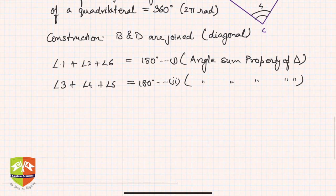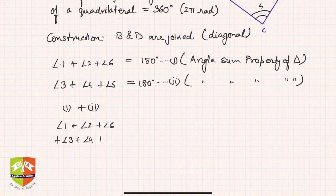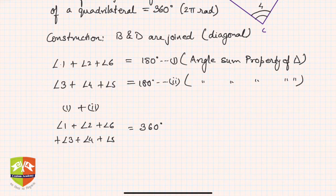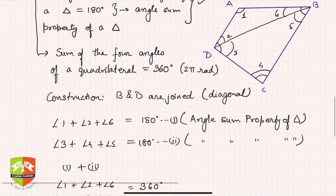Now let's add equation one and equation two. On the left-hand side we get angle 1 plus angle 2 plus angle 6 plus angle 3 plus angle 4 plus angle 5, and the right-hand side gives 180 plus 180 equals 360 degrees. Clubbing them together: angle 1 plus angle 2 plus angle 3, then angle 4, then angle 5 plus angle 6.